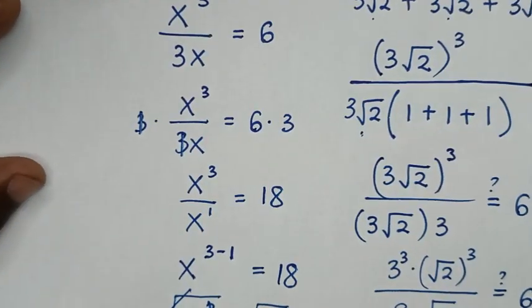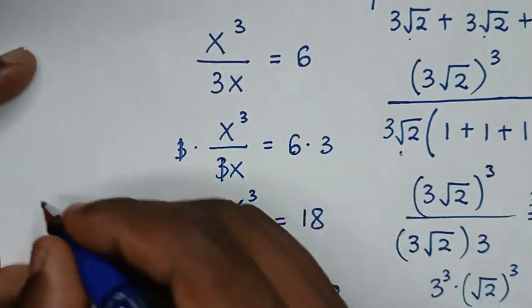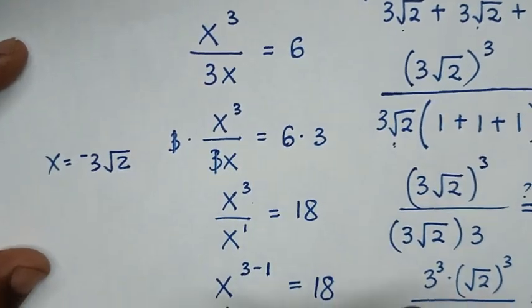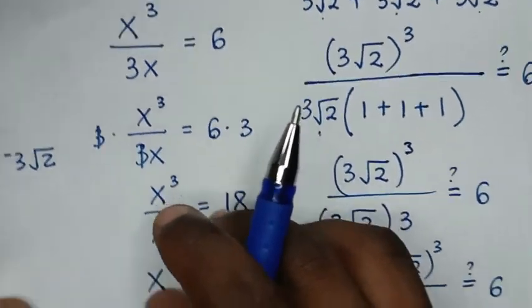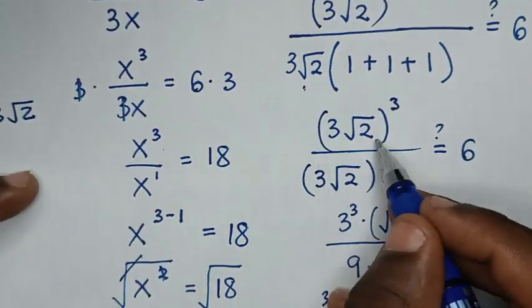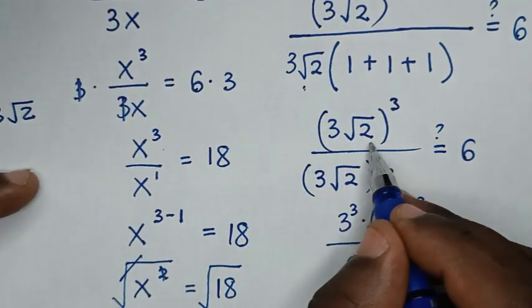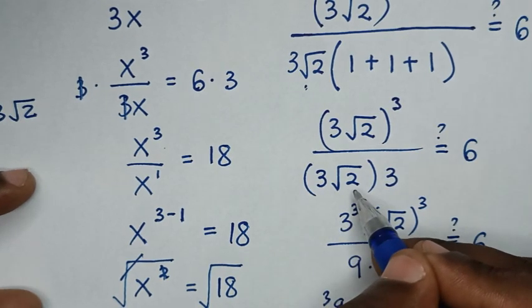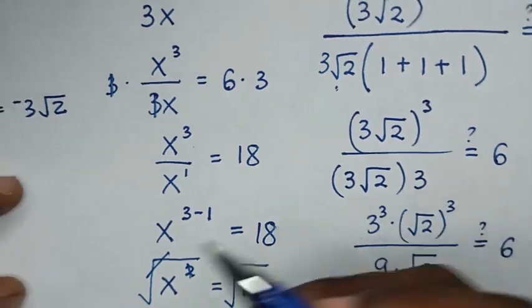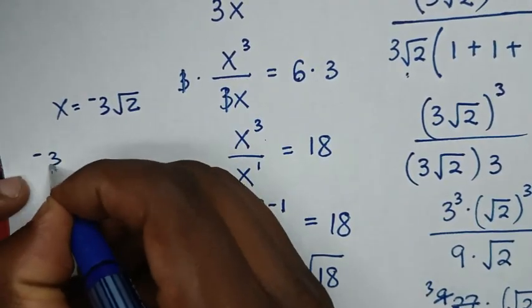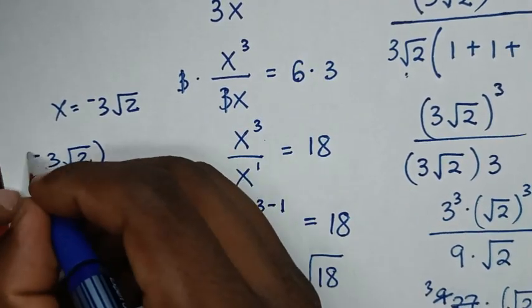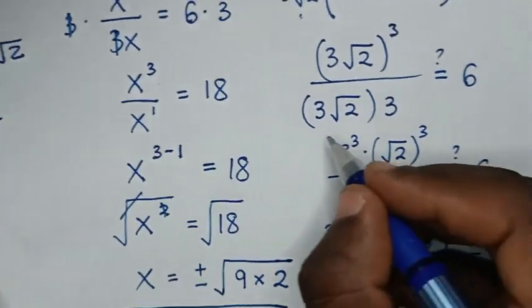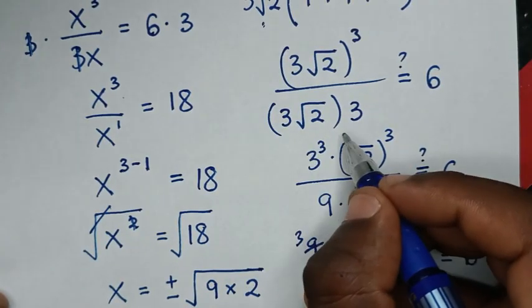To check for x is equal to negative 3 square root of 2, we'll check from the simplified step. We substitute negative 3 square root of 2 in both the numerator and denominator. So into here, it will be negative 3 square root of 2 bracket to the power 3 over negative 3 square root of 2 bracket to the power 2.